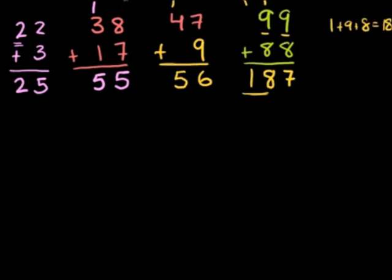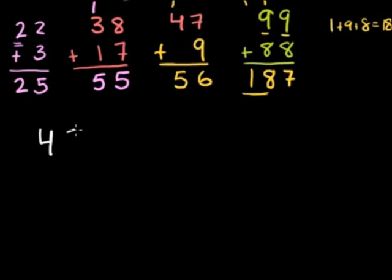It's all the same pattern — we could add two 10-digit numbers to each other as long as we're careful about carrying our digits. Let's do a four-digit number: 4,368 plus 572.